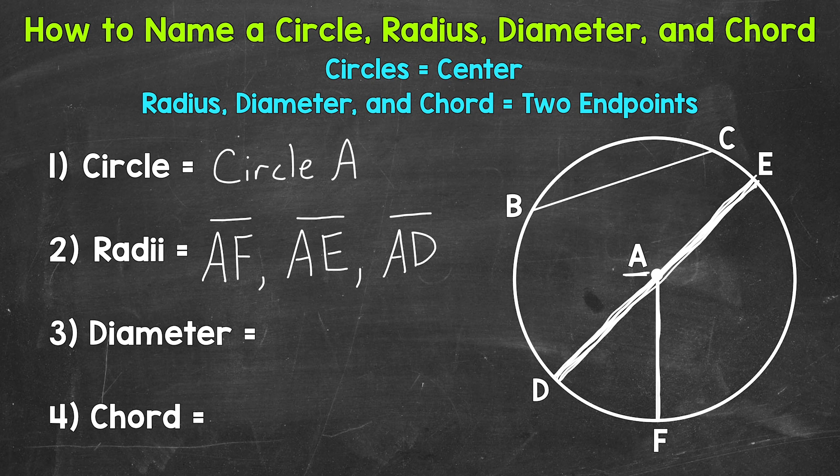We use the two endpoints, D and E, and put the line segment symbol above it. That tells us that we start at point D, and our line segment goes over to point E. Now you may be thinking that we used our diameter to name two of our radii, and that's true.